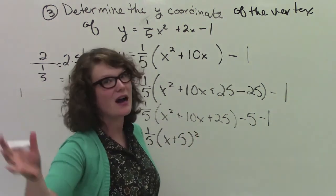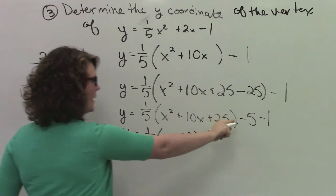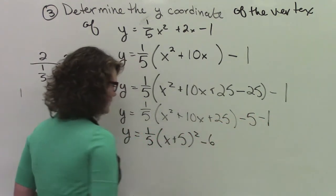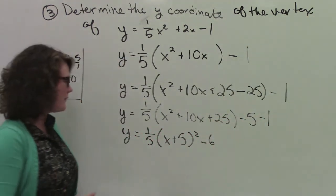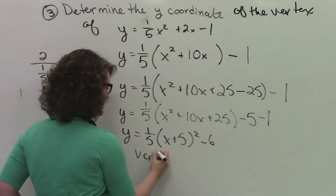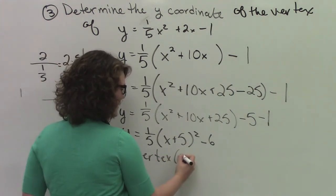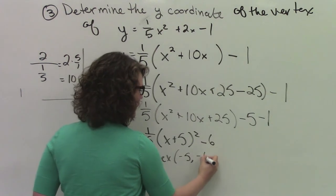Can I just go to 1 fifth times x plus 5 squared? Absolutely. I just don't want to confuse you right now. Minus 5 minus 1 is minus 6.